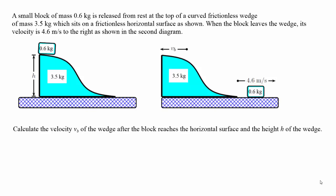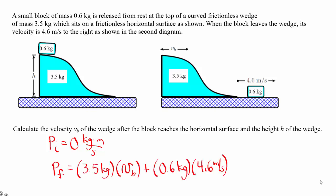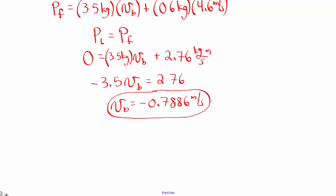To find the velocity of the wedge we're going to use conservation of momentum. Initially the block and the wedge are at rest, so the initial momentum of both of them together is zero. The final momentum of the system is the momentum of the wedge plus the momentum of the block. Applying conservation of momentum, the initial momentum of zero equals the final momentum, so the momentum the wedge has to the left equals the momentum the block has to the right. That gives the wedge a velocity of 0.7886 meters per second to the left — the negative sign shows it's moving to the left.